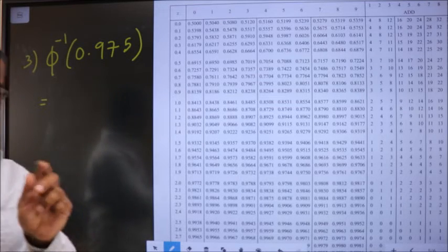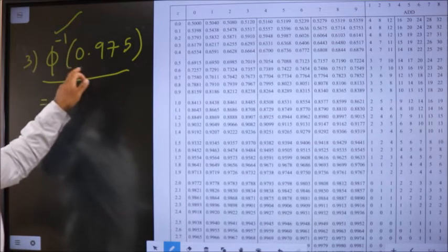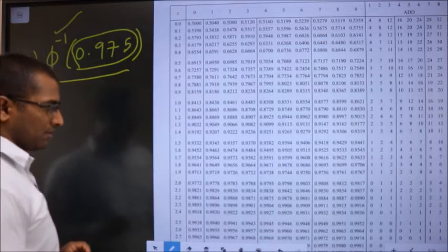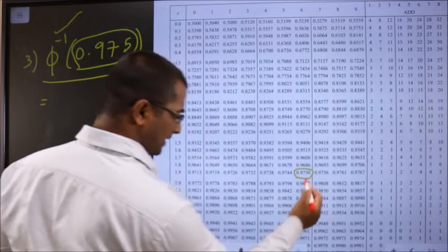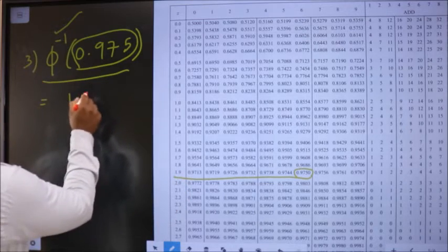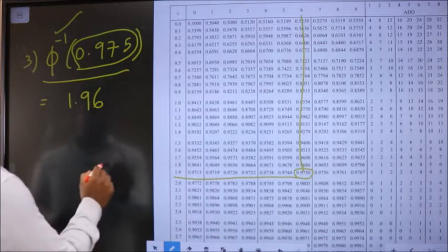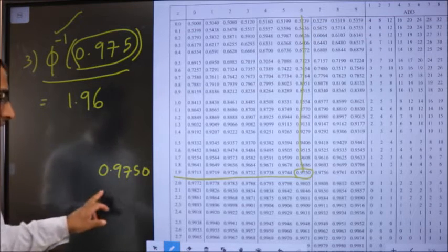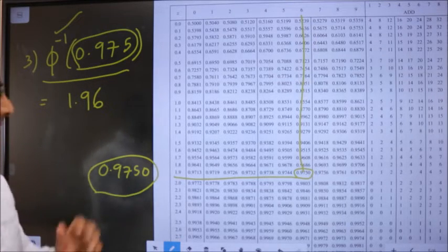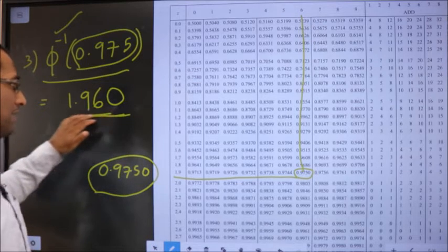Now I want to find phi inverse of 0.975. Since it's inverse, I search for this value in the table body. We have an exact match — 0.9750 — present at row 1.9 and column 6, giving us 1.96. Since it's an exact match, I need to add nothing, so the third decimal is 0. Phi inverse of 0.975 is 1.96.